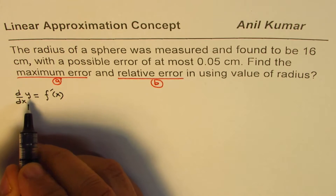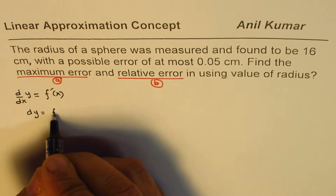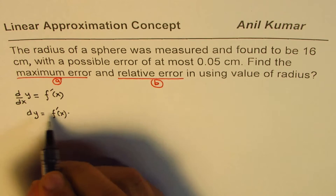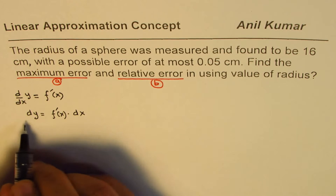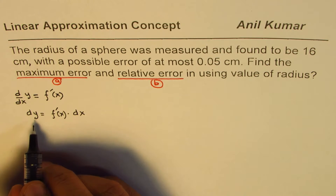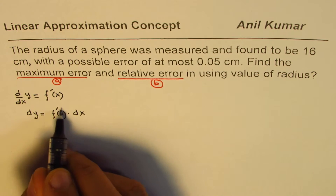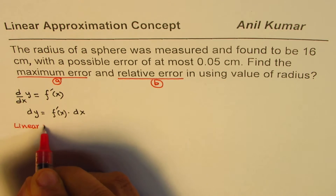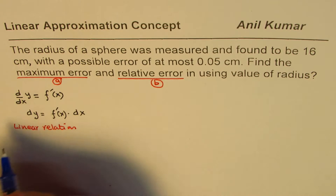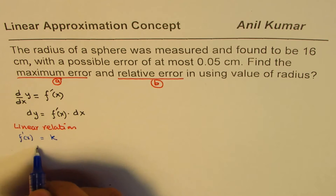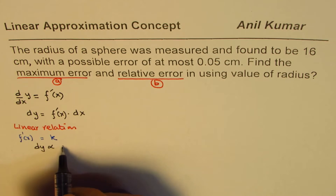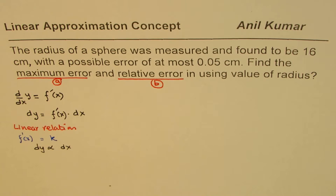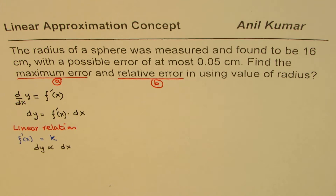From the derivative, we can say dy equals the slope or derivative times dx. So change in y is linearly related to change in x, and the constant of proportionality is the derivative — this is a linear relation. Here f'(x) is the constant of proportionality, meaning dy is proportional to dx, where the constant is the derivative at the given point.